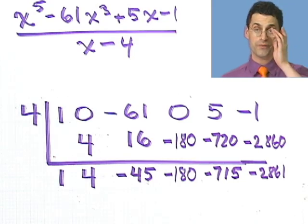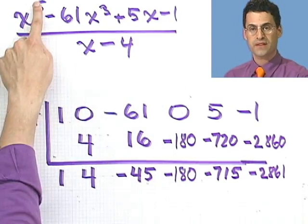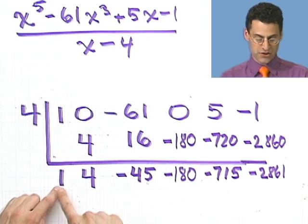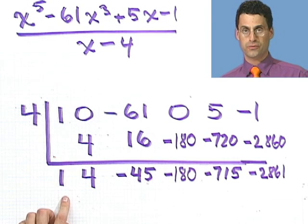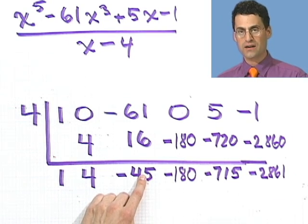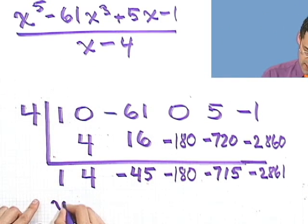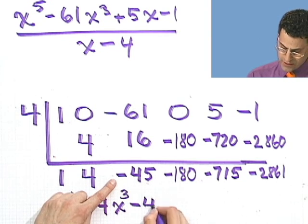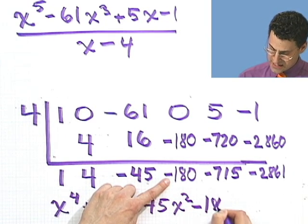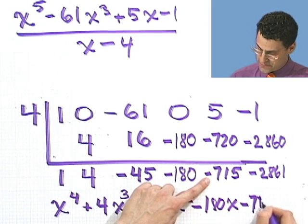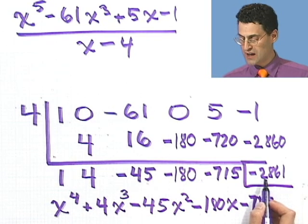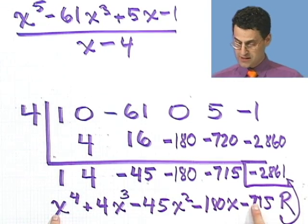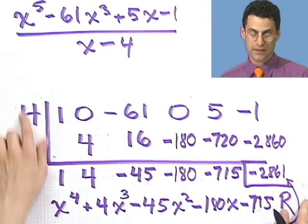Now I'm done — I just have to know how to read this off. When I take this polynomial, which has x to the fifth as the highest term, and divide it by something with an x, I start with x to the fourth in the quotient. So the coefficients give: 1·x⁴ + 4·x³ − 45·x² − 180·x − 715. And the last number, minus 2861, is the remainder.